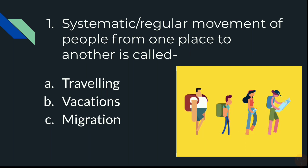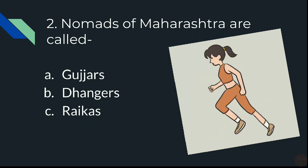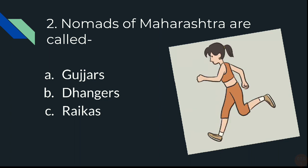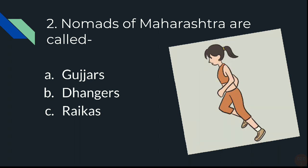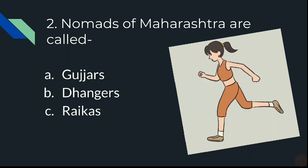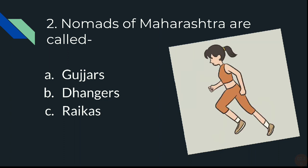Question 2: Nomads of Maharashtra are called — A) Gujjas, B) Dhangas, or C) Raikas.